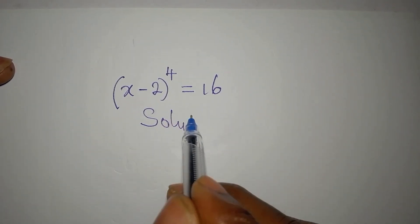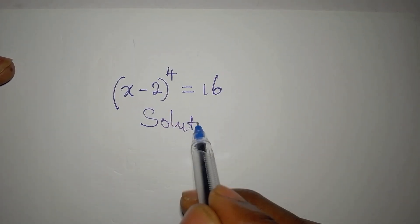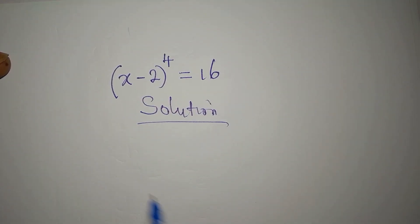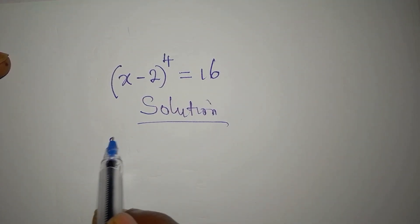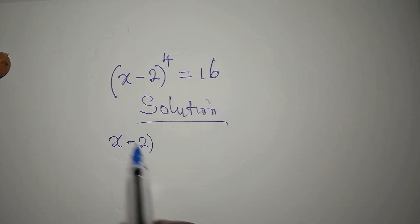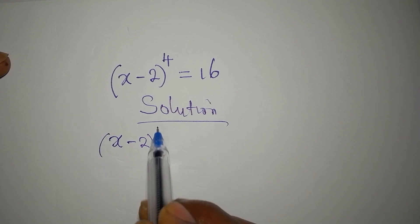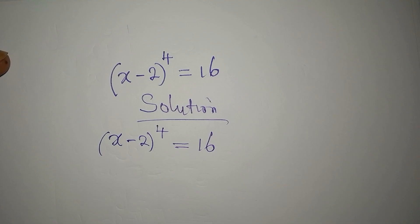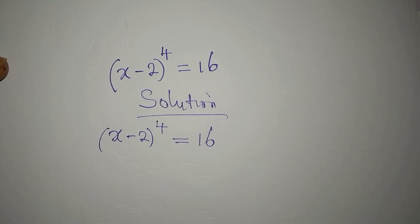Let's provide the solution to this problem. We have (x minus 2) to the power of 4 equals 16. There are two ways we can deal with this — let's use one method.